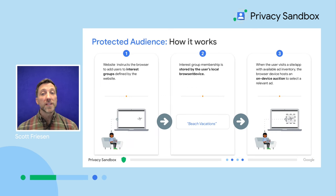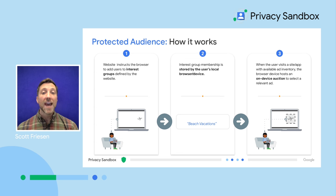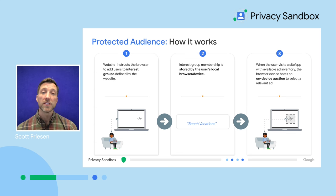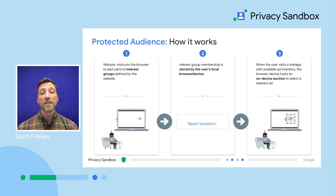Next, let's talk about Protected Audience, formerly known as Fledge. The API enables on-device ad auctions to serve remarketing and custom audiences, again without cross-site third-party tracking. Companies define interest groups — for example, people who have visited the advertiser's site and browsed beach vacations — and instruct the browser to add users to said interest group. The interest group membership is stored by the user's local browser. When the user visits another site with available ad inventory, the browser initiates an on-device ad auction to select a relevant ad that matches the user's interest group, running on top of the contextual auction.